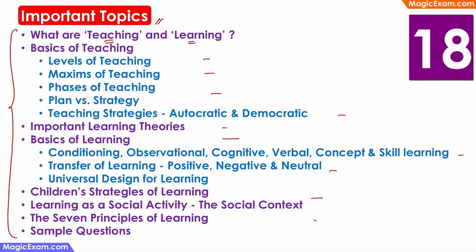We will start with understanding what are teaching and learning, the basics of teaching such as levels, maxims, and phases. We will look at what is a plan and what is a strategy. Then we will talk about autocratic and democratic teaching strategies, important learning theories, basics of learning such as conditioning, observational, cognitive, etc. We will talk about transfer of learning, universal design for learning, children's strategies for learning, learning as a social activity, and the seven principles of learning. We will end with sample questions from previous question papers.